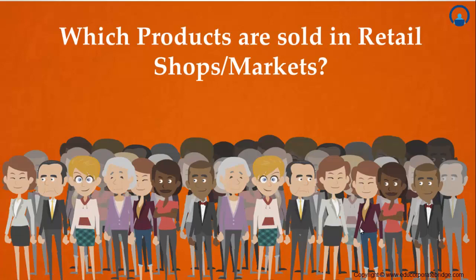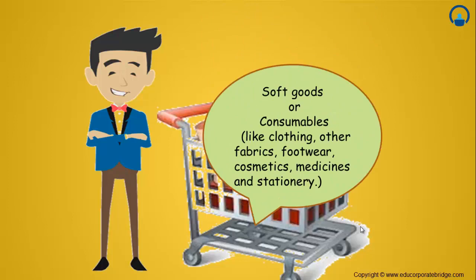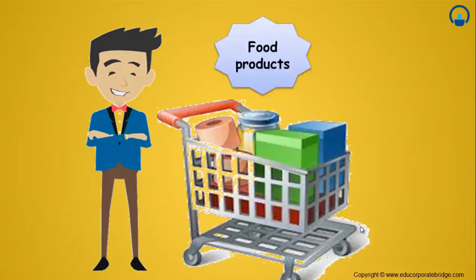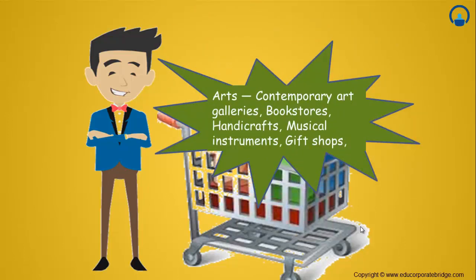So which products are sold in retail shops or the supermarkets? The products include soft goods or consumables like clothing, other fabrics, footwear, cosmetics, medicines and stationery, food products, arts like contemporary art galleries, bookstores, handicrafts, musical instruments, and gift shops.